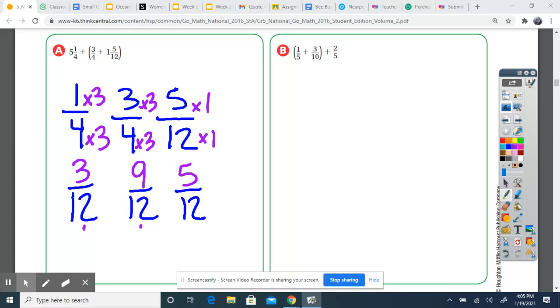So now I'm going to rewrite my problem with them all having the same denominator. I'm just going to write it over here because I don't have enough room. So five and three twelfths plus, open parentheses, nine twelfths plus one and five twelfths.